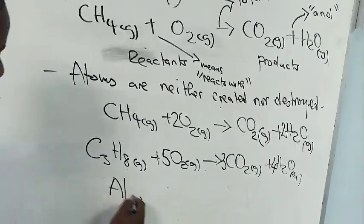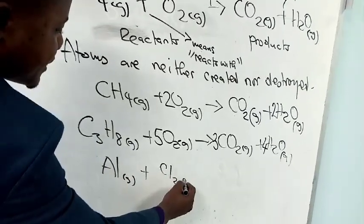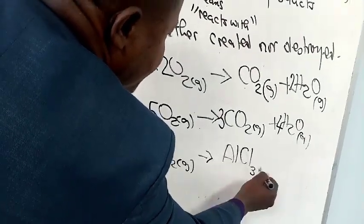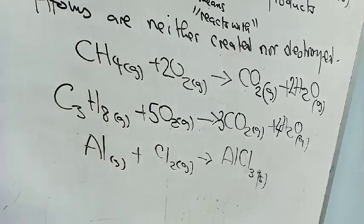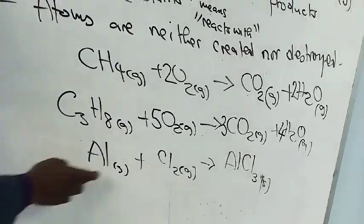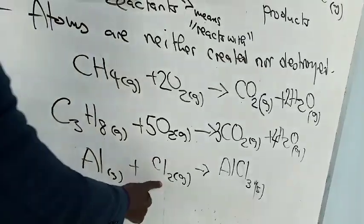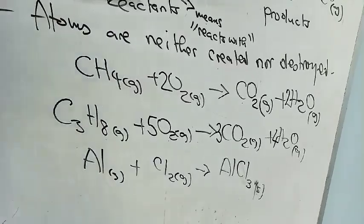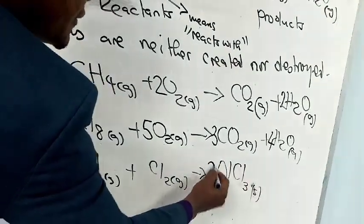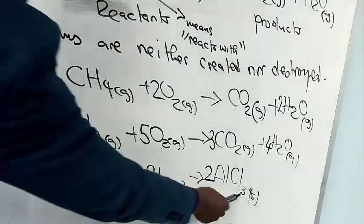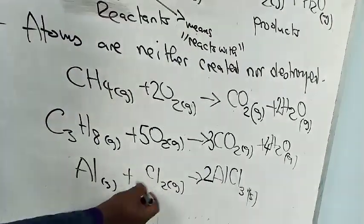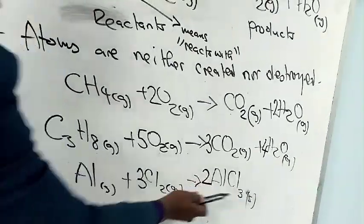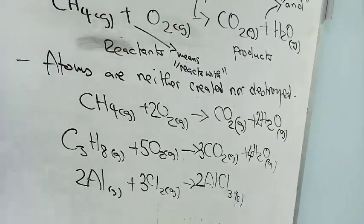Another example: aluminum plus chlorine gas gives aluminum chloride. Let's balance the equation. We have one aluminum and one aluminum. Here we have two chlorines and on the product side three chlorines. With two and three, the balance is at six. So let's try a two in front of AlCl3, giving us six chlorines. Here we have two chlorines per Cl2, so to balance we need a three in front of Cl2. Now this two has affected aluminum, so we need a two in front of Al. The equation is now balanced.